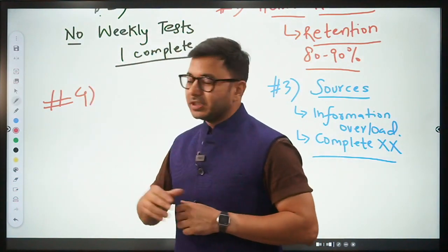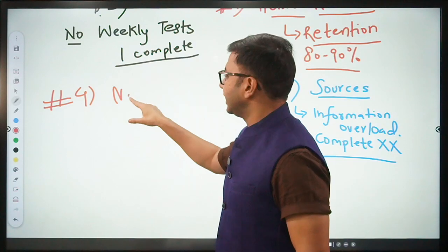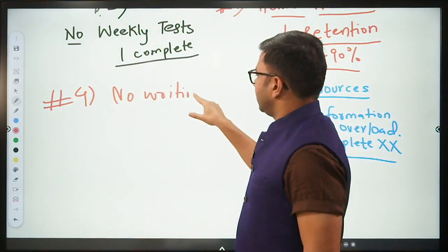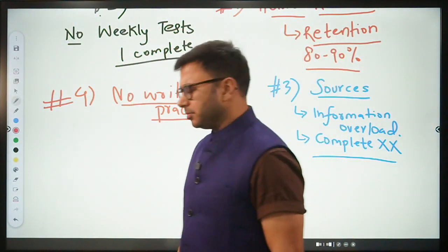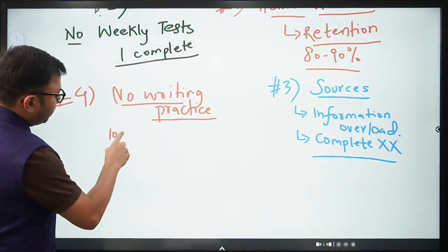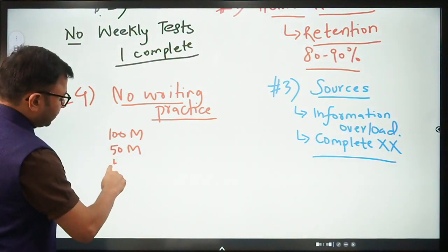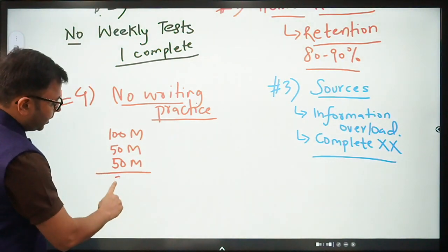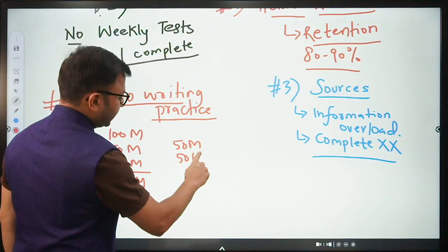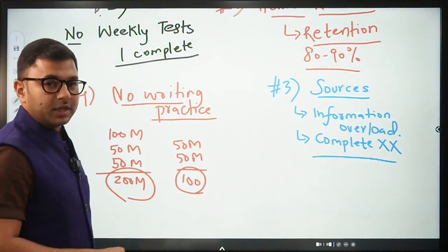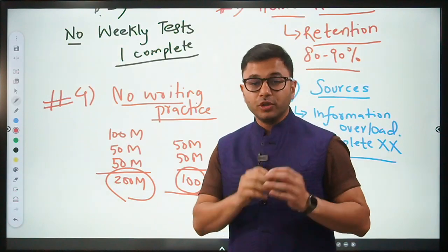The fourth sign. No writing practice. More than 50% of RBI exam is now dependent on this. Very simple calculation. Phase 2: 100 marks English based upon writing, 50 marks finance and management based upon writing, 50 marks economic and social issues based upon writing. That's 200 marks. The objective part is only 100. So out of 300, 200 marks is dependent upon answer writing, your writing skill. And only 100 marks, one third, is dependent upon your MCQ skills.